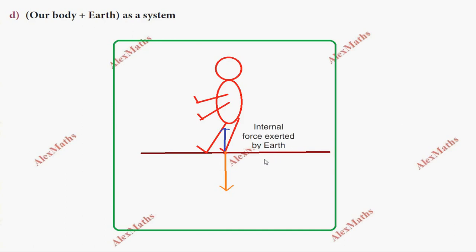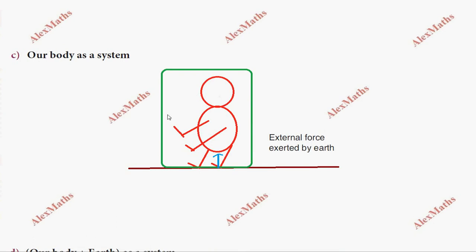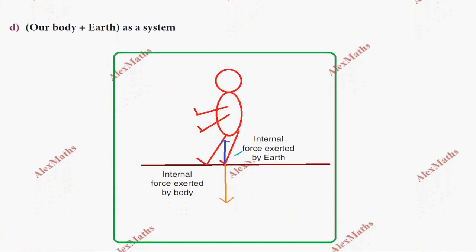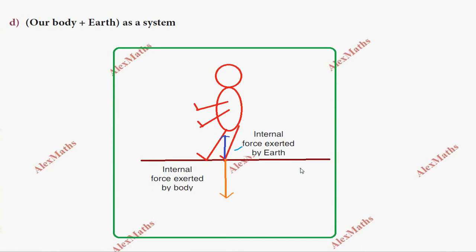The internal force is exerted by the earth on the human body, and the internal force exerted by the human body on the earth — these are the internal forces when the body plus earth is considered as the system. The external force is the force exerted by earth on the human body when only the human body is the system.